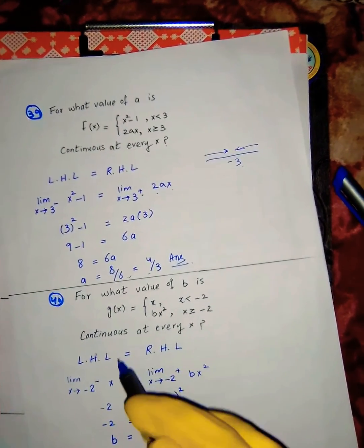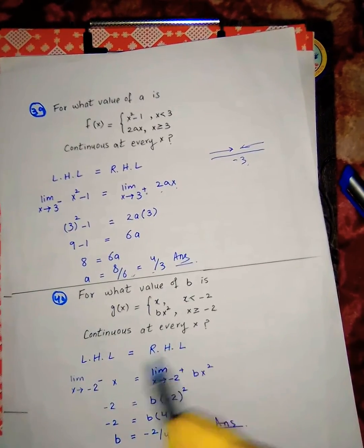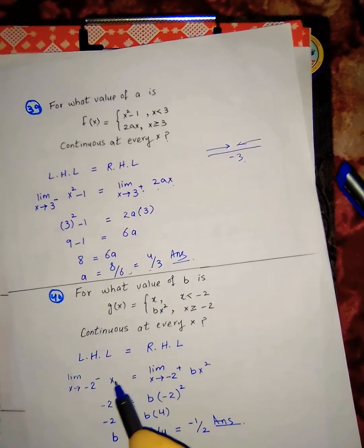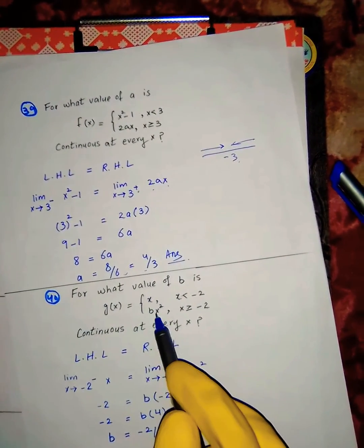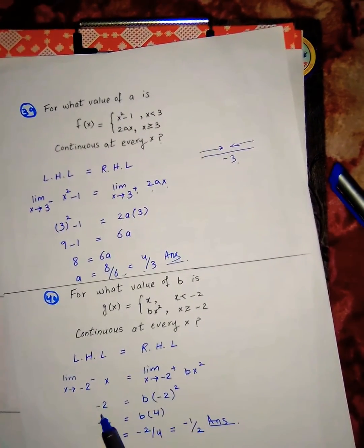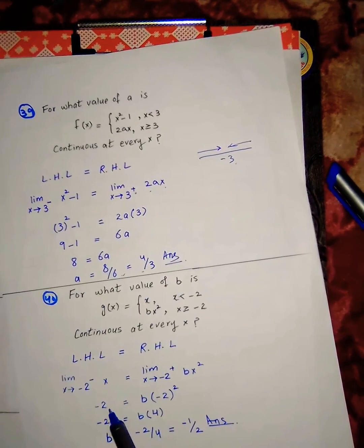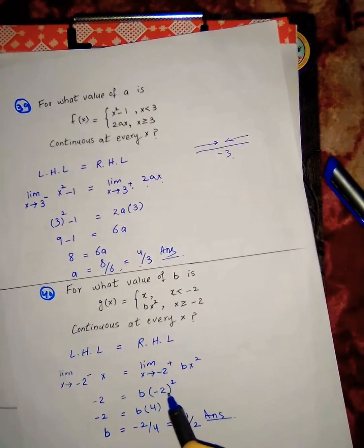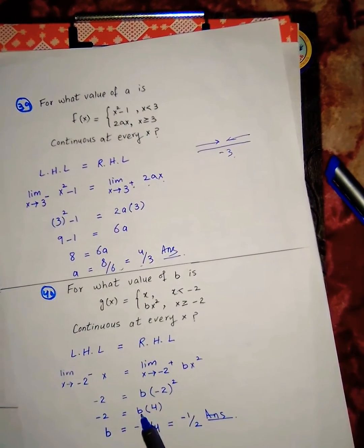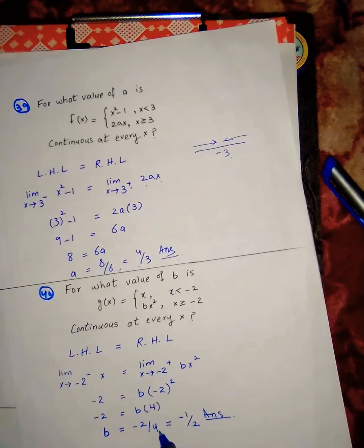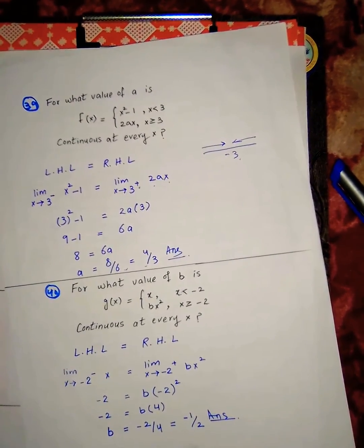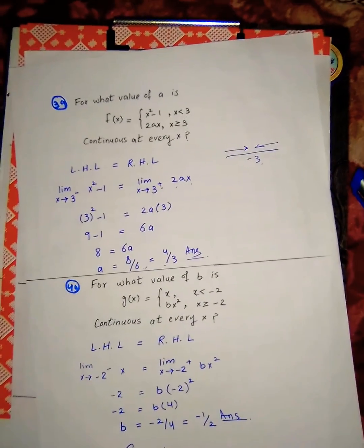Setting left-hand limit equal to right-hand limit: putting x = -2 into bx², we get b times (-2)² = 4b. Simplifying gives the answer as -1/2. Goodbye and good luck!